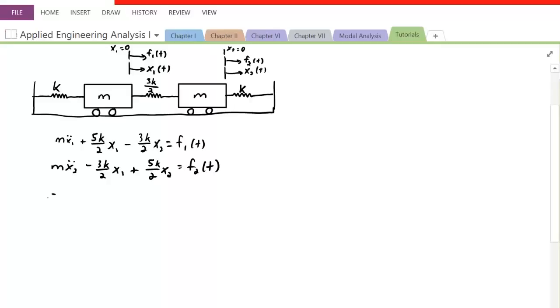So for X double prime, we have X1 double prime and X2 double prime. Their values are M for the first ODE and 0 for X2, 0 and M for the second ODE. There isn't an X prime, so we can skip that and do the X by itself.